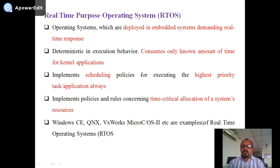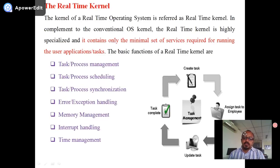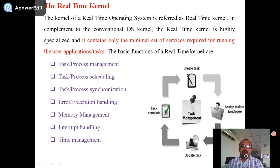Real-time operating systems are deployed in embedded systems demanding real-time response. Here the execution must be deterministic — consuming only a known amount of time. Scheduling policies always execute higher priority tasks. Time-critical allocation of system resources is important. Examples of RTOS include Windows CE, QNX, VxWorks, and MicroC/OS.